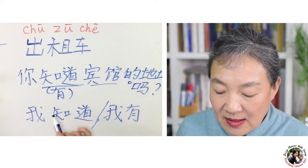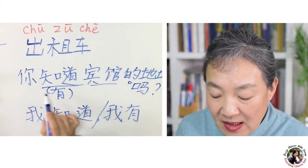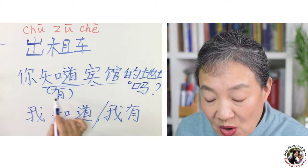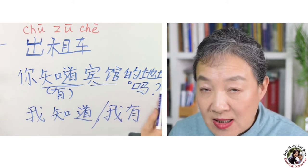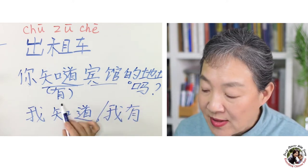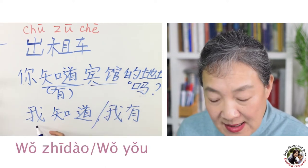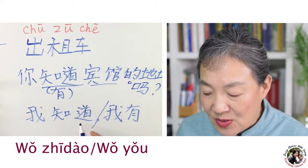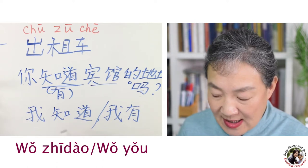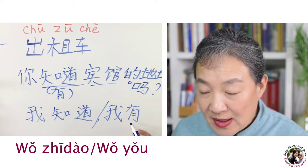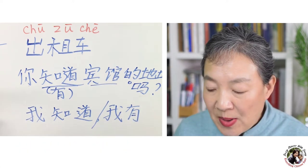你知道宾馆的地址吗? Or the taxi driver may ask 你有宾馆的地址吗? — 有 means have — 'Do you have the address of the hotel?' You may answer 我知道 — I know the address — or 我有 — I have the address of the hotel.